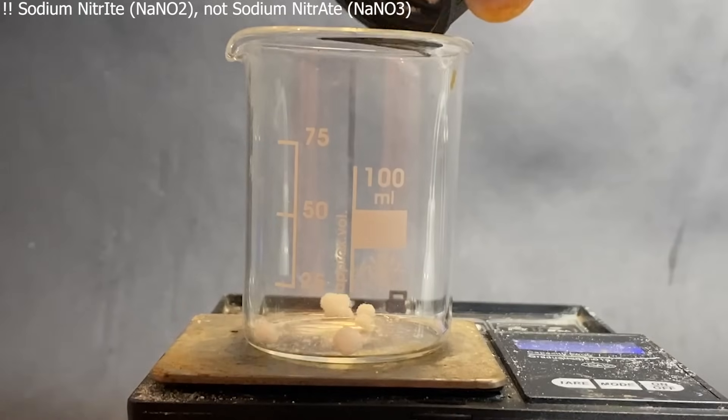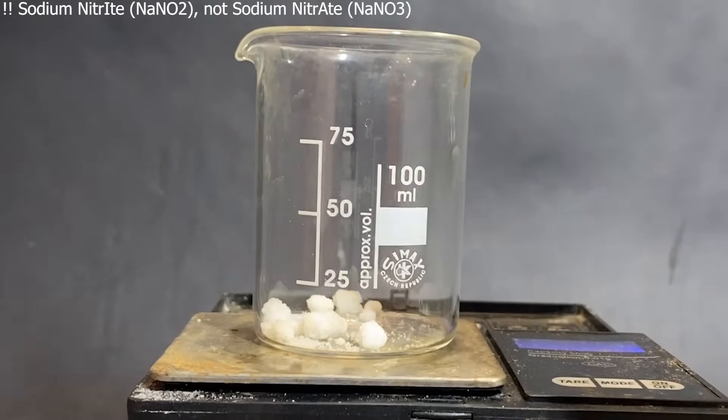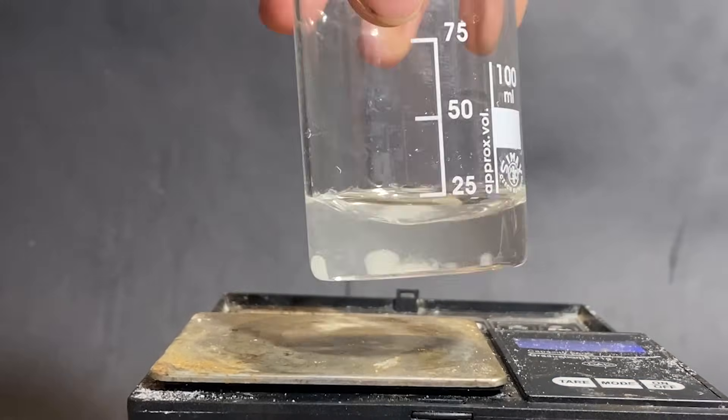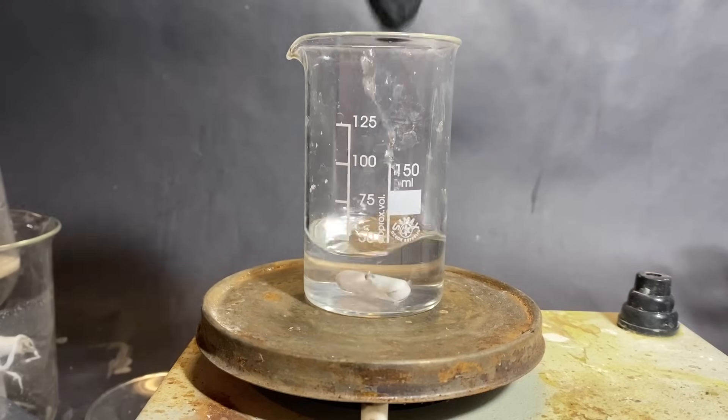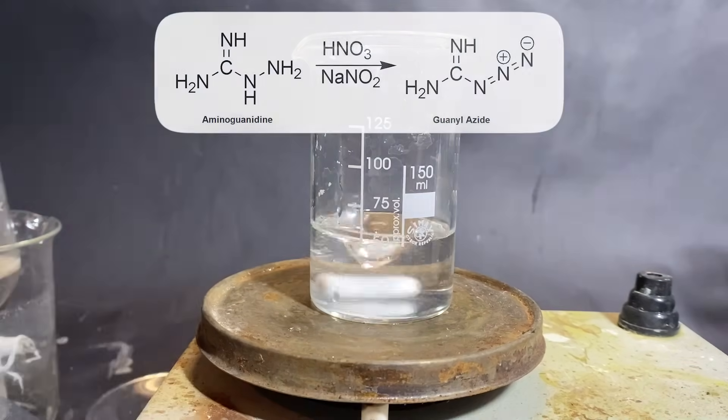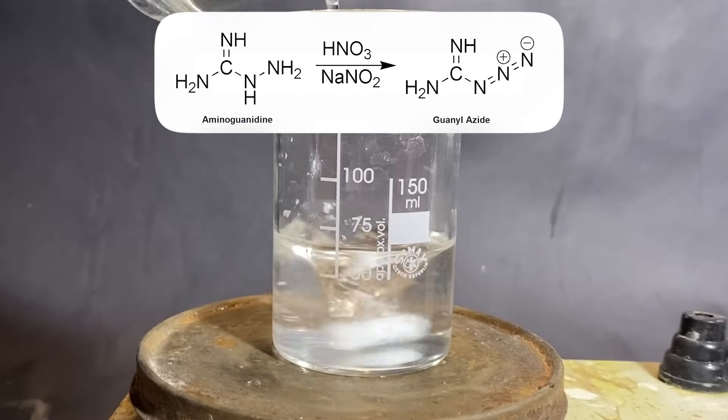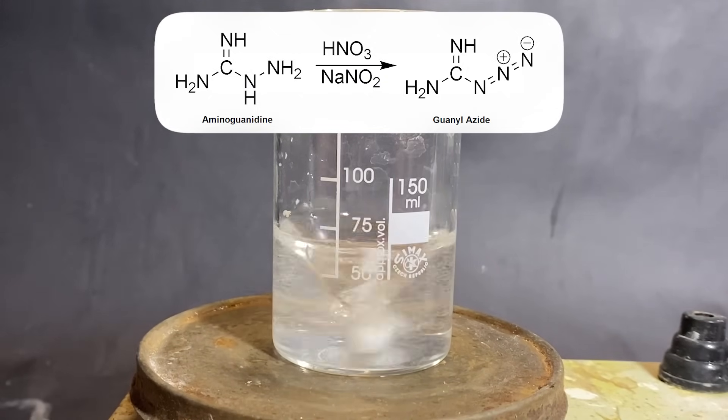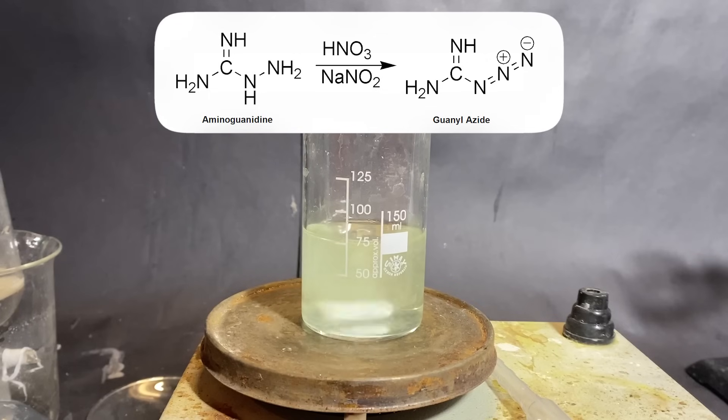Then I quickly made a solution of sodium nitrite. Then I added the stir bar, turned on the stirrer, and I started adding the sodium nitrite solution. Here we are performing a diazotization reaction of the aminoguanidine nitrate into guanyl azide.